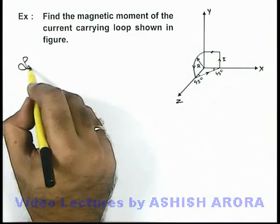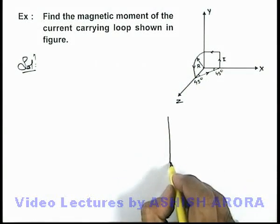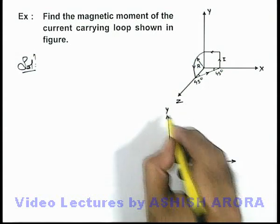To find out the magnetic moment of this loop, it is advisable in such situations to split the loop into three loops in three different planes.